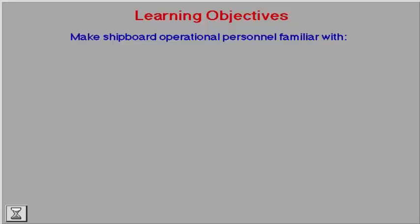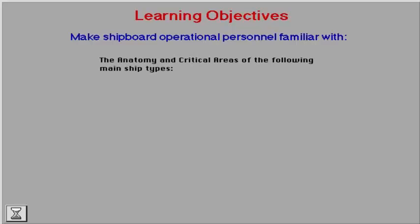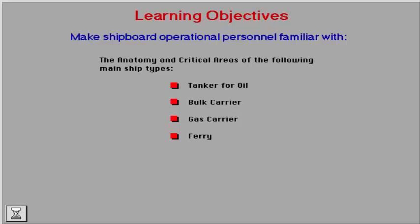The learning objectives of this section are to make shipboard operational personnel familiar with the anatomy and critical areas of the following main ship types: tanker for oil, bulk carrier, gas carrier, ferry, and ro-ro vessel.